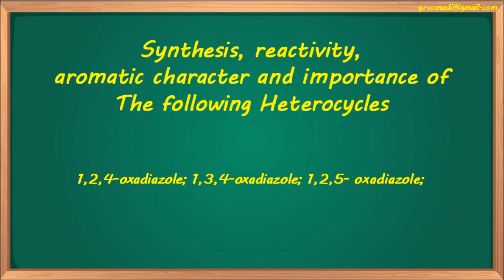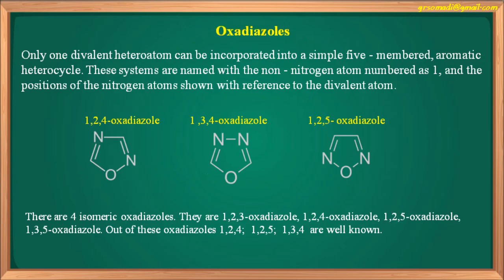Next we will see the oxadiazole synthesis. In our syllabus we have 1,2,4-oxadiazole, 1,3,4-oxadiazole, and 1,2,5-oxadiazoles. Only one divalent heteroatom can be incorporated into a simple five-membered aromatic heterocycle. These systems are named with the non-nitrogen atom numbered as 1 and the positions of the nitrogen atoms shown with reference to the divalent atom.